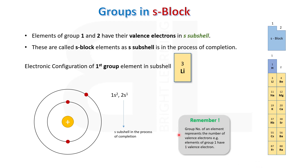Remember, group number 1 represents the number of valence electrons. Elements of group 1 have 1 valence electron. As their group number is 1, all the elements have only 1 electron in their valence shell.